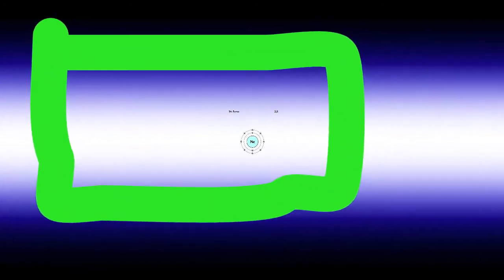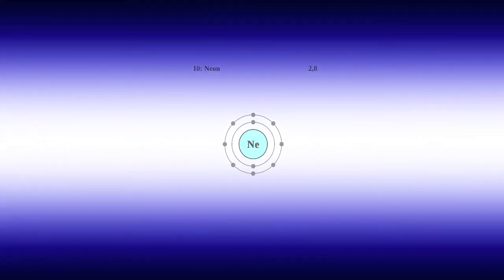If we zoom in we can see the neon atom. The dots are electrons. See the eight outside electrons? They are in the outside energy level and the two on the inside are in the inner energy level.